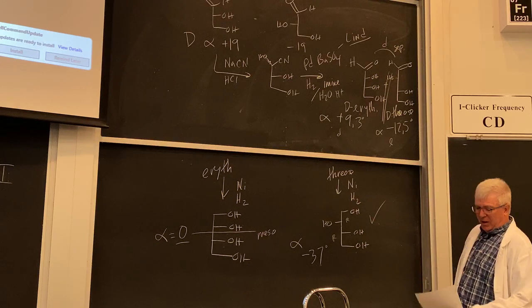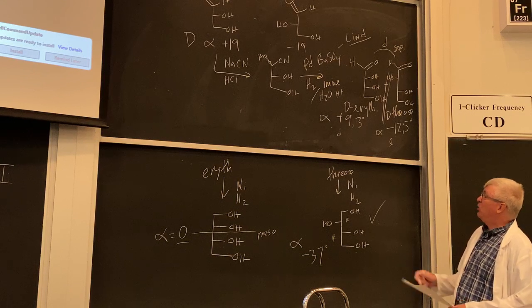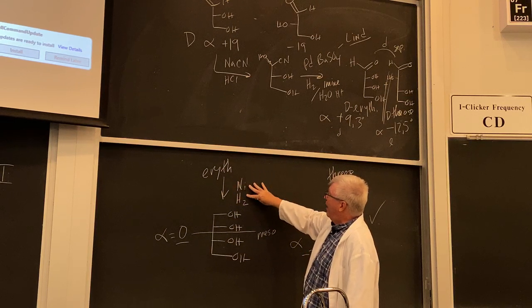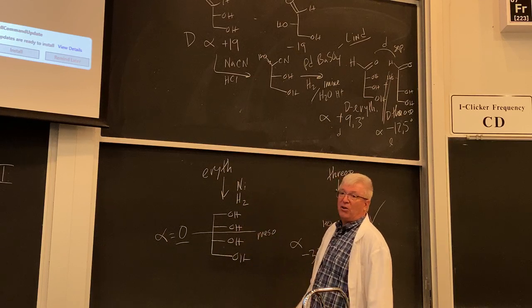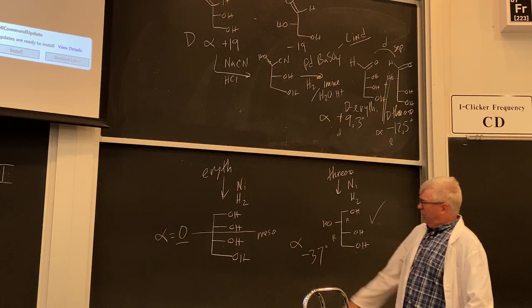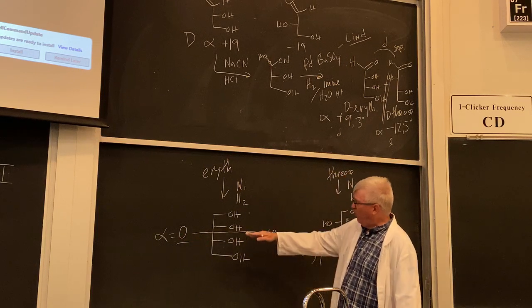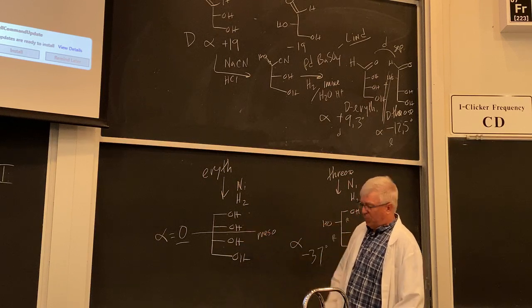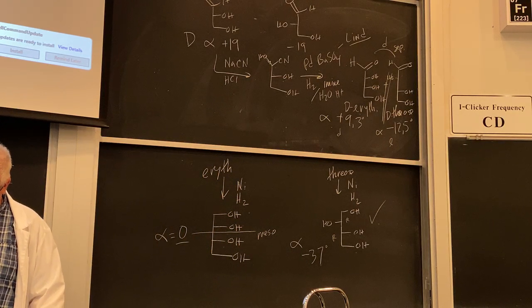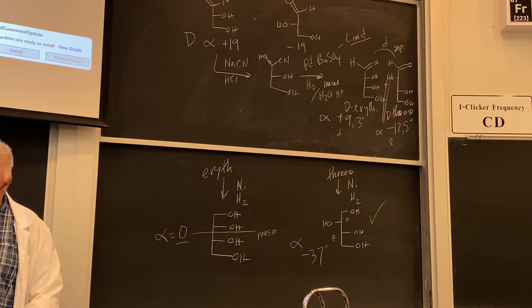Fisher didn't know whether the absolute configuration was truly right or left — he made a guess — but he knew the relative stereochemistry: erythrose stereocenters were on the same side; threose stereocenters were on opposite sides. He continued this approach through the whole series — using cyanohydrin reactions and alditol optical rotations — to nail down the relative stereochemistry of all naturally occurring sugars. The ones with a symmetry element in the alditol form proved the relative configuration.